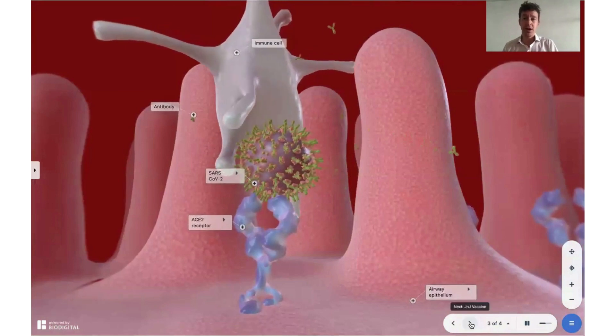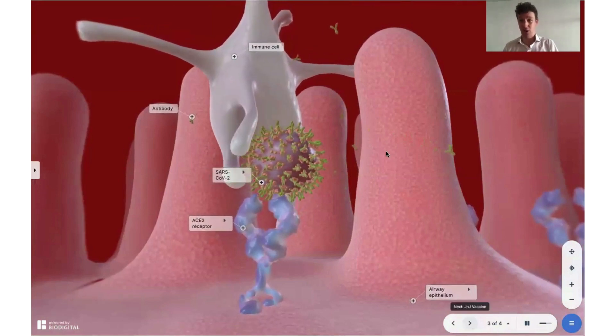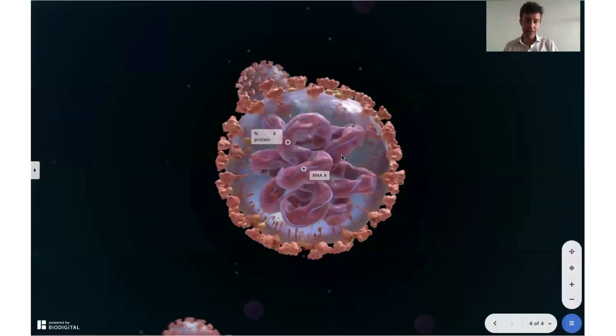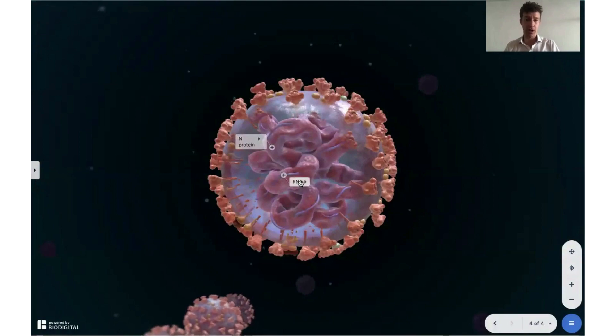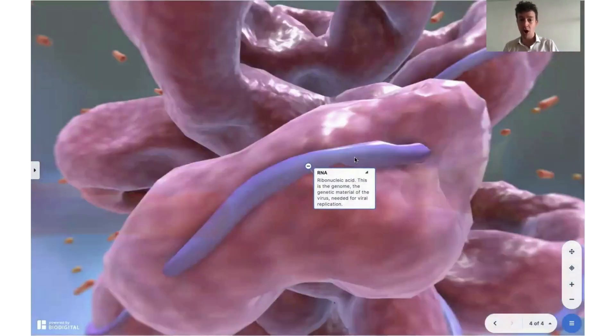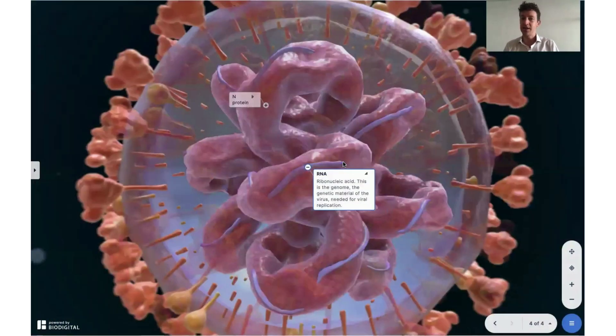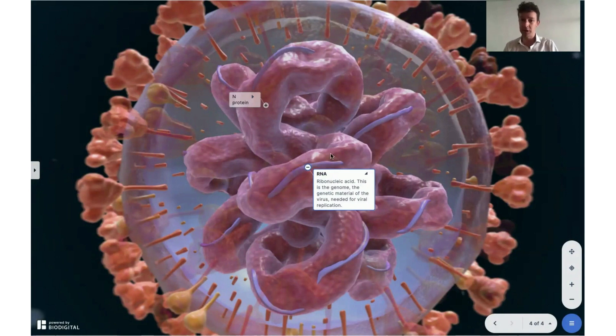So how does the J&J vaccine work? Well, if you look at the structure of the virus, this is the virus itself, the world's first 3D interactive visualization of COVID-19. Specifically, I want to look at the RNA. This is RNA. This is the genetic code that enables this virus to replicate and build all of the various structures around it, including the spike proteins.